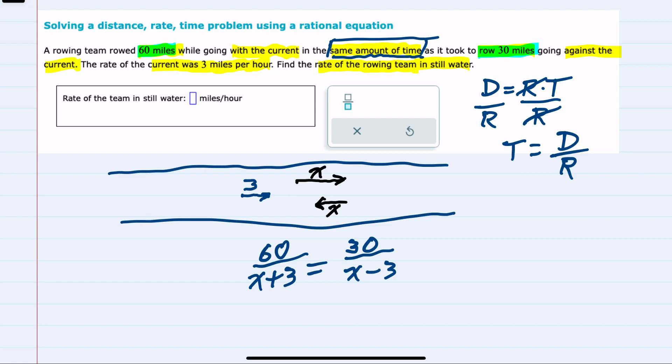So we're saying this is the time, distance divided by rate, they spent paddling upstream. This is the time, distance divided by rate, that they spent going downstream. And I know that it's the same amount of time up and down, so that's why we can say these are equal.